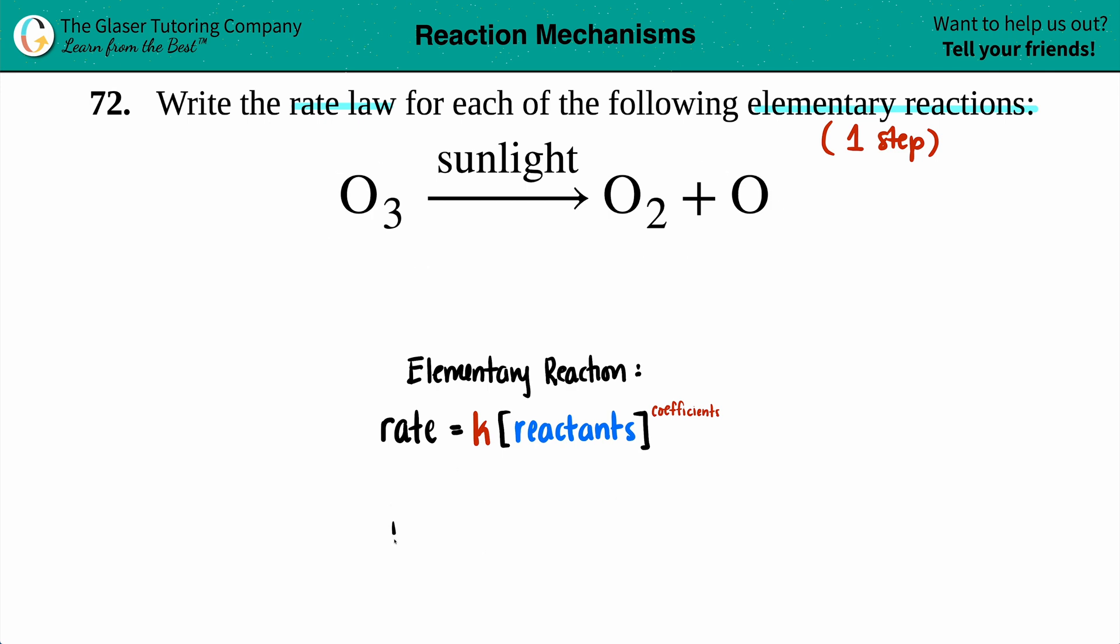In this case, rate equals k times the concentration of the reactants. What reactants do we have here? We have O3, so rate equals k[O3].